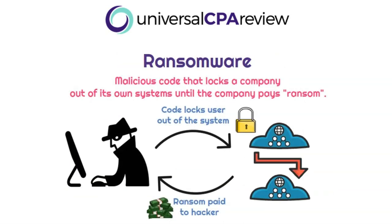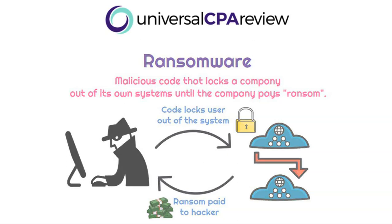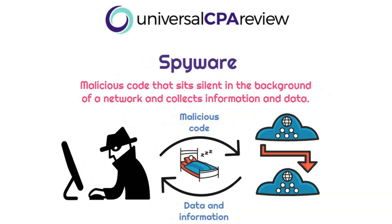The next one is called ransomware — one you've probably seen in a movie. The hacker locks the user or company out of their network and demands a ransom payment, saying something like 'pay me $5 million and I'll let you back in.' Hopefully the company has data on a backup, but if not, they'll be forced to pay that ransom. If you see anything about a payment to the hacker, that is ransomware.